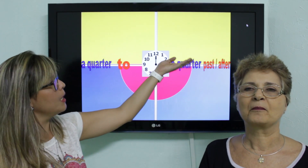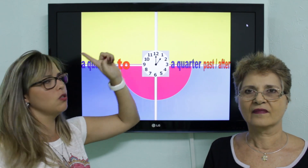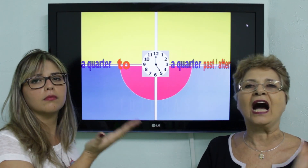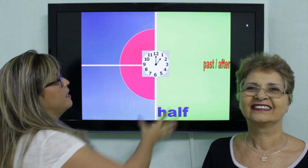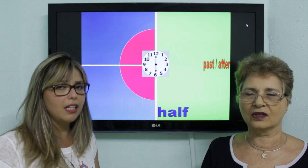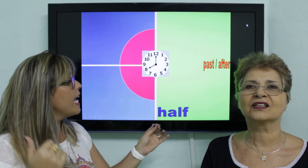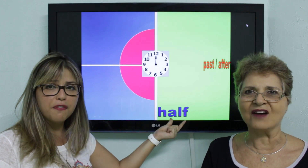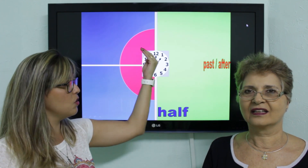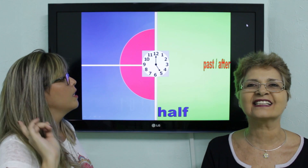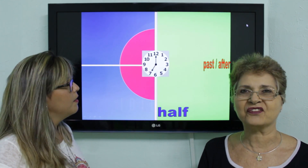O quinze que passou da uma — a quarter past one. Everybody, ou se vocês preferirem: a quarter after one. Let's repeat: a quarter past one, a quarter after one. Aqui vai ser a primeira meia hora. A gente pode dizer uma e trinta — one thirty. E lembra do TH: one thirty. And half — que é metade. Half past: uma e trinta. Ou half after. A gente pode usar os dois.